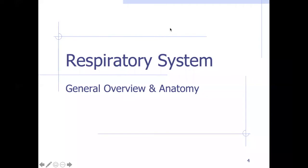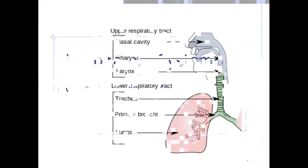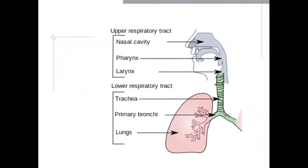We're going to dive into the respiratory system, starting with a general overview and a peek at the anatomy. Our respiratory system is split up into two different sections: we have the upper respiratory tract and the lower respiratory tract.